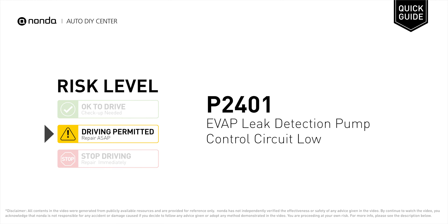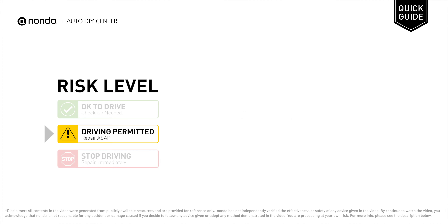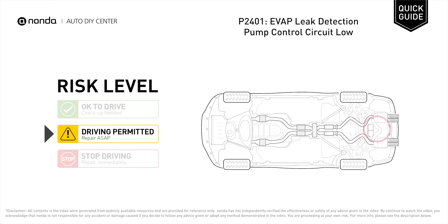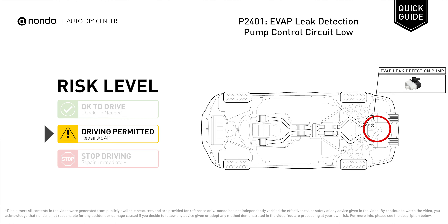P2401 is a diagnostic trouble code for EVAP leak detection pump control circuit low. Under this circumstance, short distance driving is permitted, but your vehicle should be repaired as soon as possible. It indicates that the ECM has detected the EVAP leak detection pump control circuit has low voltage.